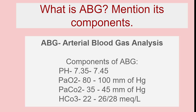What is ABG? Mention its components. ABG is Arterial Blood Gas Analysis. It is an invasive procedure to measure oxygen level in the blood and to measure how well your lungs and kidneys are working. The components of ABG are: pH 7.35 to 7.45, partial pressure of oxygen PaO2 is 80 to 100 mmHg, partial pressure of carbon dioxide PaCO2 is 35 to 45 mmHg, and normal bicarbonate HCO3 is 22 to 26 or 28 milliequivalent per liter.